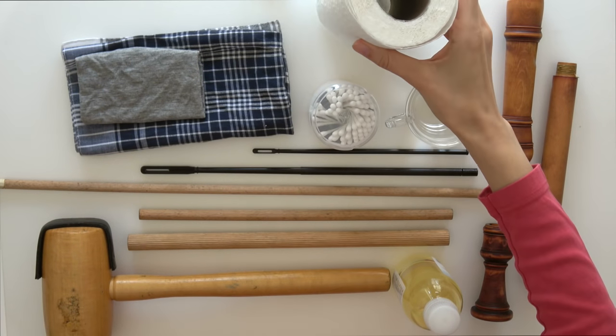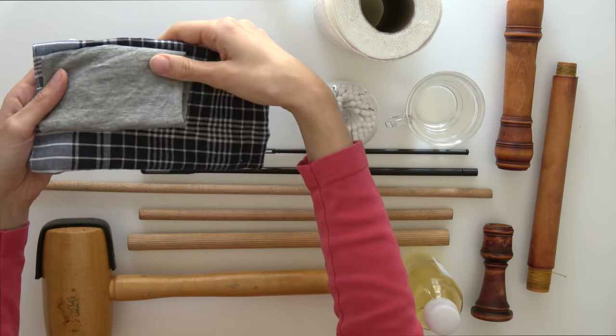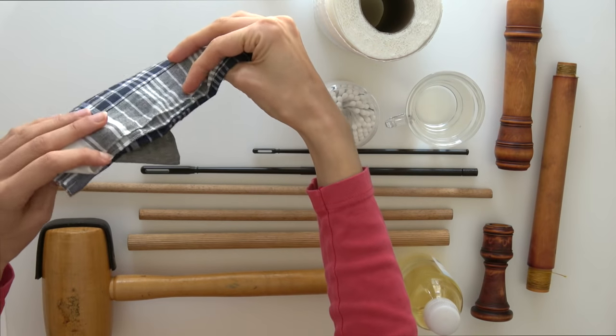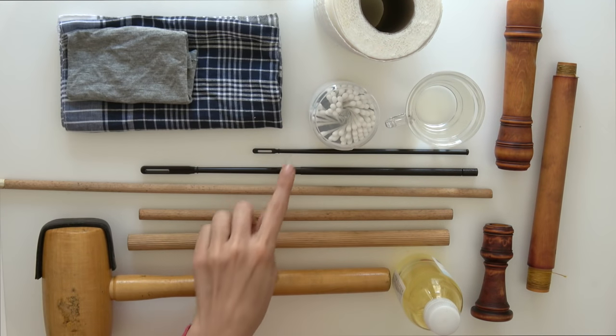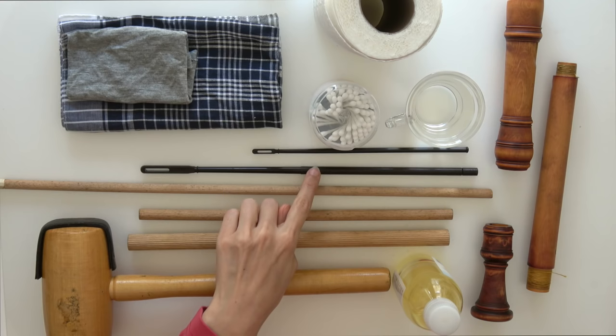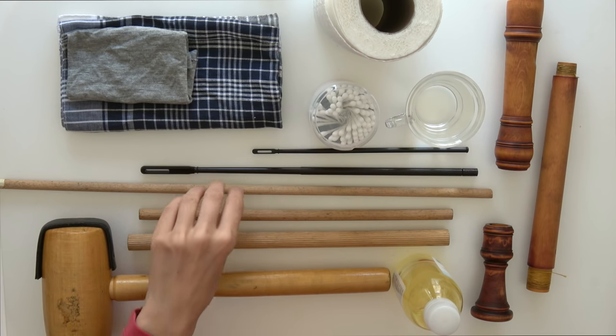We will also need kitchen paper. Here we've got some cotton cloth, a small and a big cleaning stick for either smaller or bigger recorders.